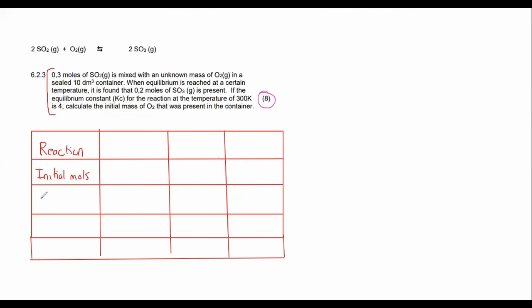Moles, and then you say the change. If your teacher says different things that's absolutely fine, I've seen a lot of different ways you can do these tables. This one would say moles at equilibrium.